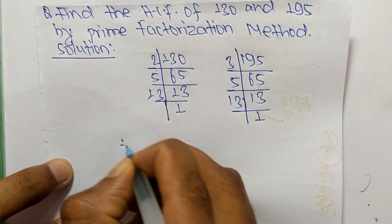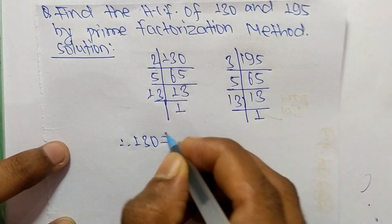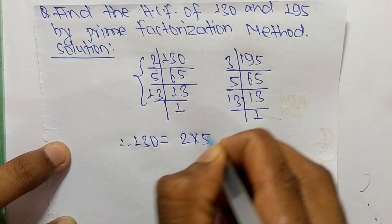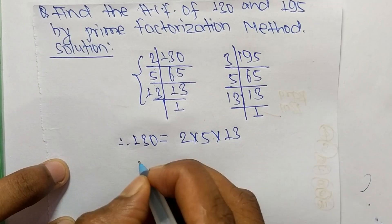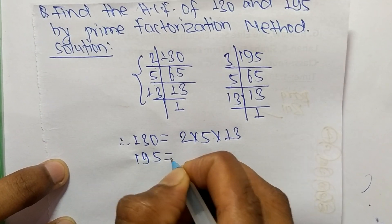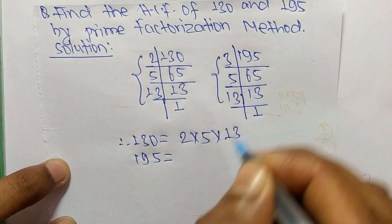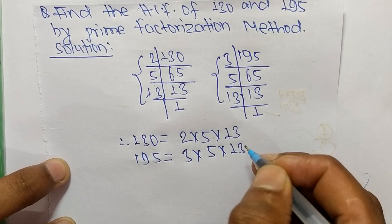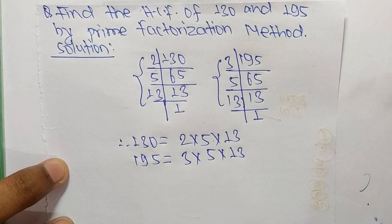From these prime factors we can write 130 equals 2 times 5 times 13. Likewise, 195 equals 3 times 5 times 13.